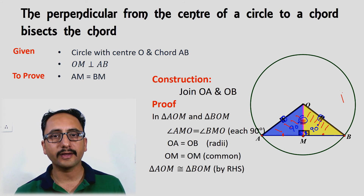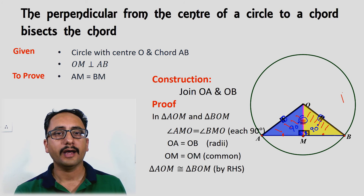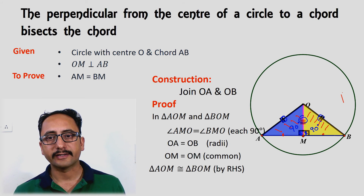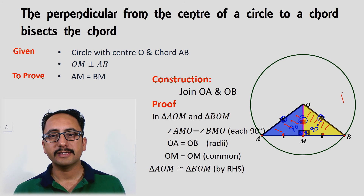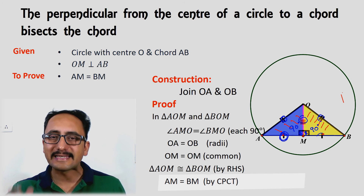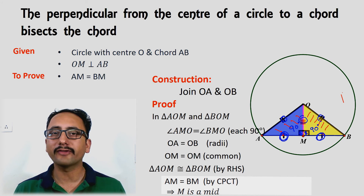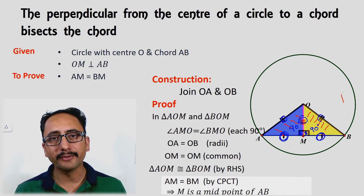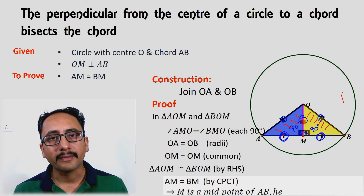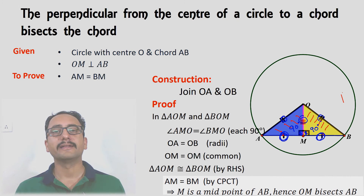Since the triangles are congruent, by CPCT the remaining sides AM equals BM. If AM and BM are equal, then M is the midpoint of AB, and therefore OM bisects AB.